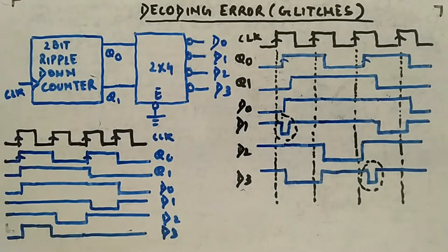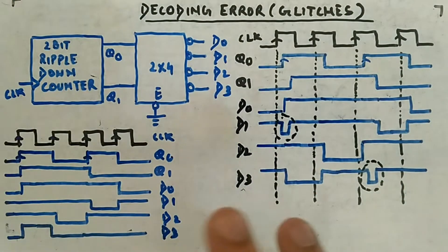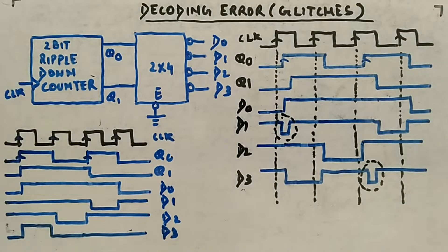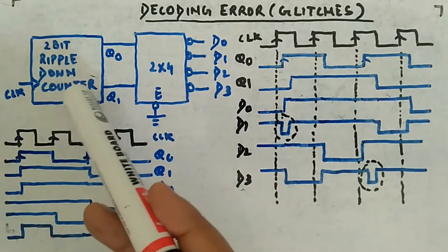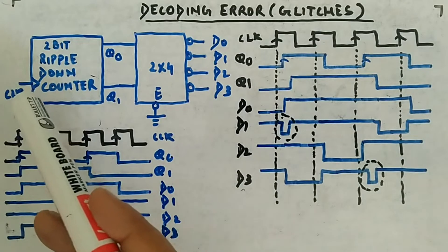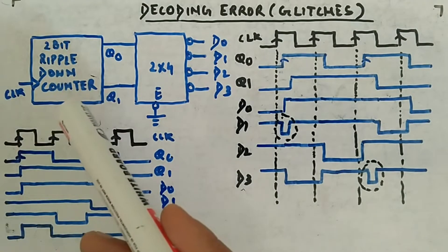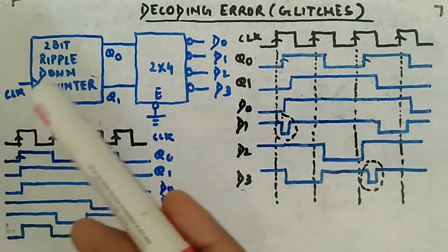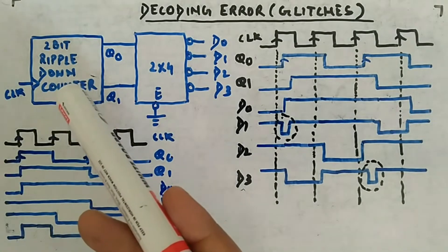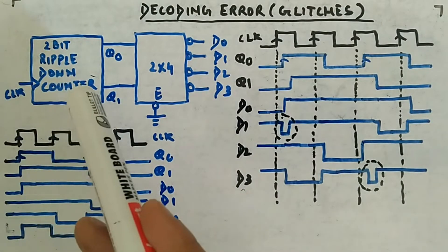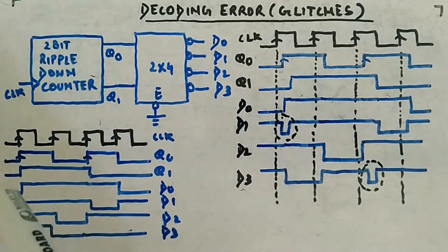Now let's look at something called decoding error. So till now we have seen all the flip-flops and how they are connected to make an asynchronous counter. Now take such an example: a 2-bit ripple down counter with positive edge trigger clock. All of them are positive edge trigger. There are two T flip-flops connected, and the output of one is given as input to the other's clock.